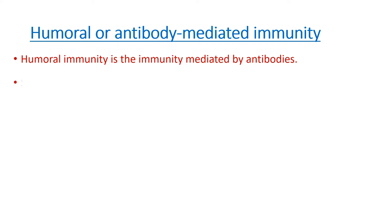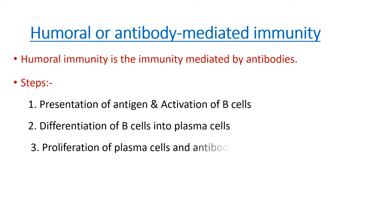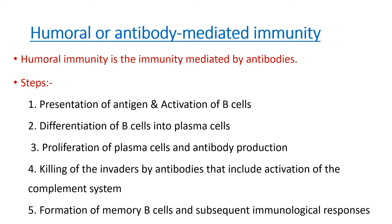Humoral immunity is mediated by antibodies. The basic steps are: presentation of antigen and activation of B cells, differentiation of B cells into plasma cells, proliferation of plasma cells and antibody production, killing of invaders by antibodies including activation of the complement system, and formation of memory B cells for subsequent immunological responses. When asked as a short note, you elaborate on each step.